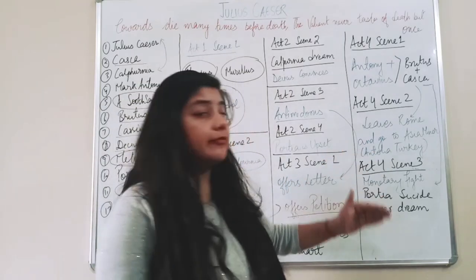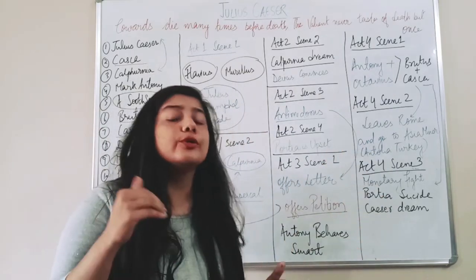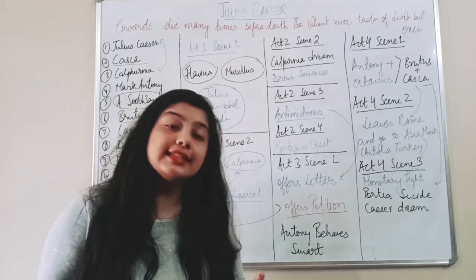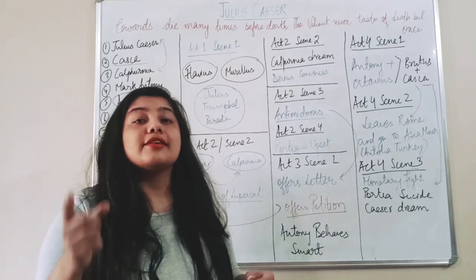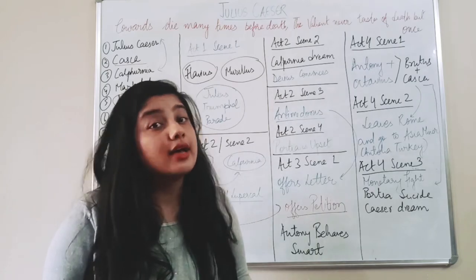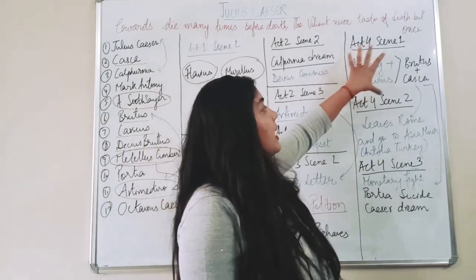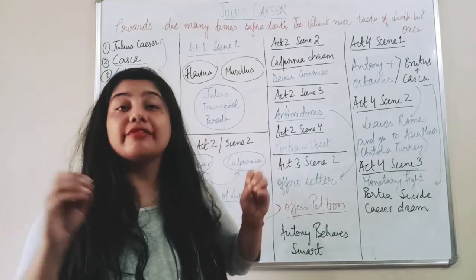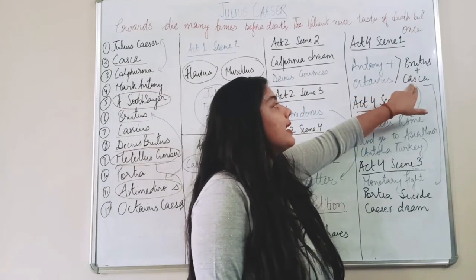When all of them have met in the ground. And before that Brutus has got a dream of Caesar in which Caesar says that 'we are going to meet again and then we are going to decide who was wrong and who was right.' So now these four people have met in the ground, they are fighting.